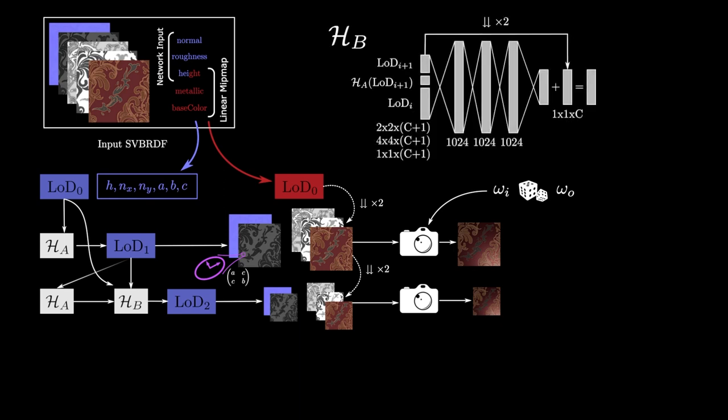HB takes as input 4x4, 2x2 and 1x1 texel blocks and produces a 1x1 output. It is composed of fully connected layers and has more capacity than HA due to its higher dimensional inputs.